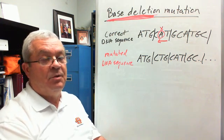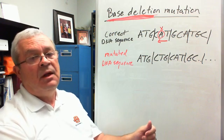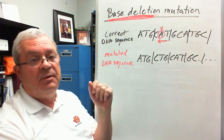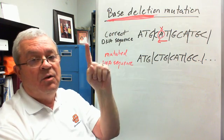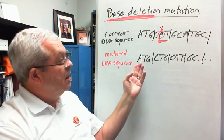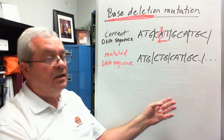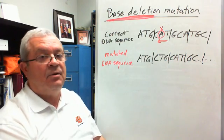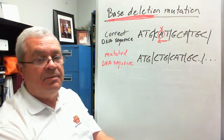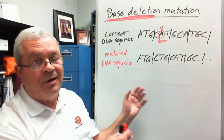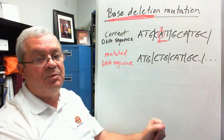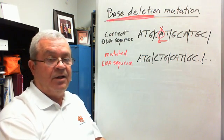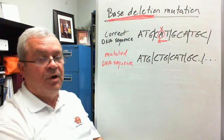Most students vote for base deletion. Why? In base substitution mutations, how many amino acids are affected? One — just one. Here, how many amino acids are affected? Everything from the mutation onward, and the stop codon is not in the right place — the protein is wiped out. Which is more serious: wiping out the protein entirely, or having one amino acid change? It's base deletion for sure.